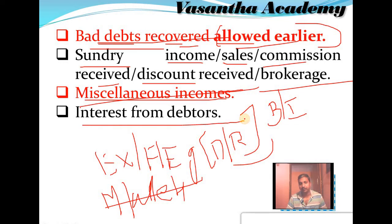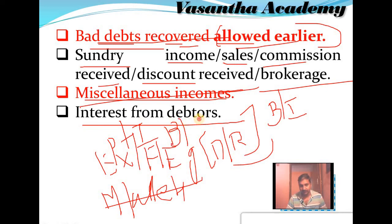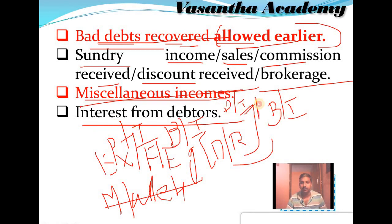Next is interest from debtors. Any interest received from the debtor — why is interest paid by the debtor? Sometimes there is a delay in the payment made by the debtor, therefore they pay the principal amount plus interest. Then it is considered as business income. When payment is made by the debtor within the due date, no interest arises.